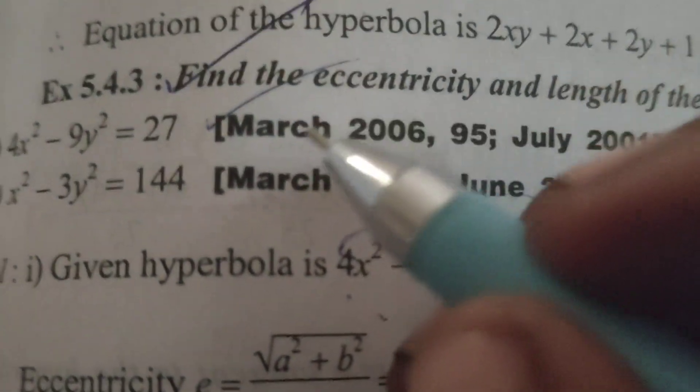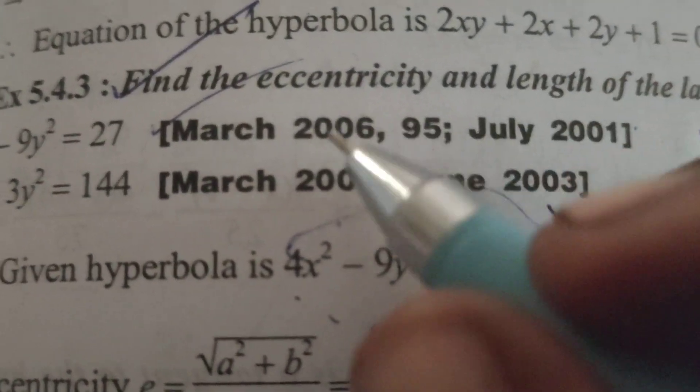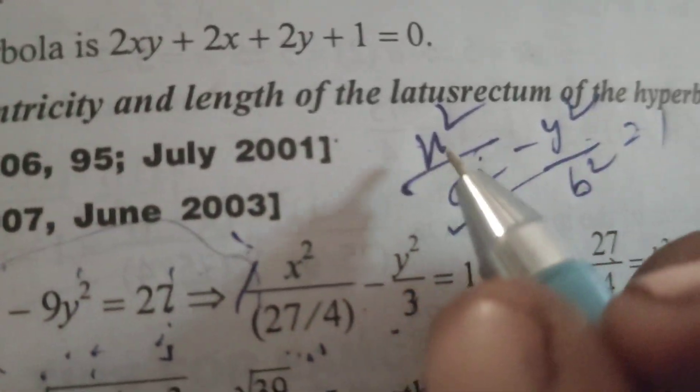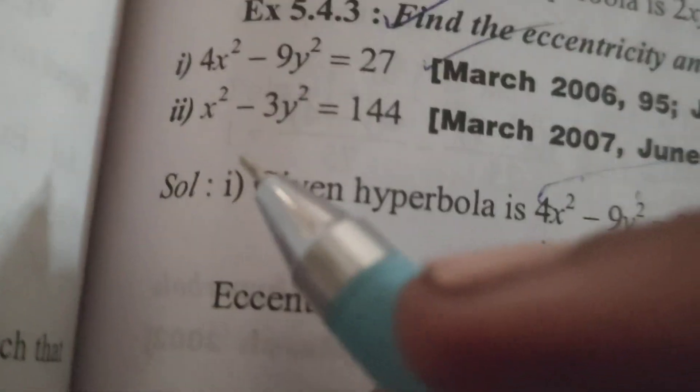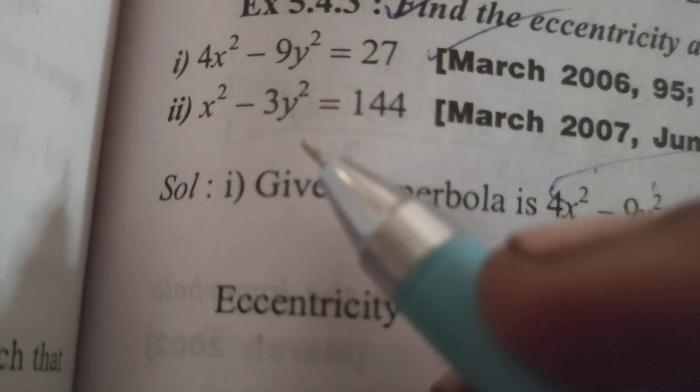This is Dr. Hrithi. Today we are going to explore this problem: find the eccentricity and length of the latus rectum of the hyperbola x² - 3y² = 144.